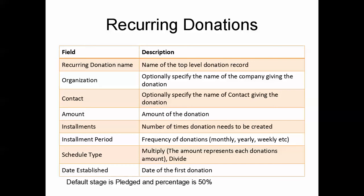The installment period options include monthly, annually, or weekly. There is also a field called Schedule Type, which is a picklist that can be set to Multiply or Divide. If set to Multiply and the amount is $1,000, each installment is $1,000. If set to Divide with an amount of $12,000 and 12 installments, each individual donation will be $1,000.